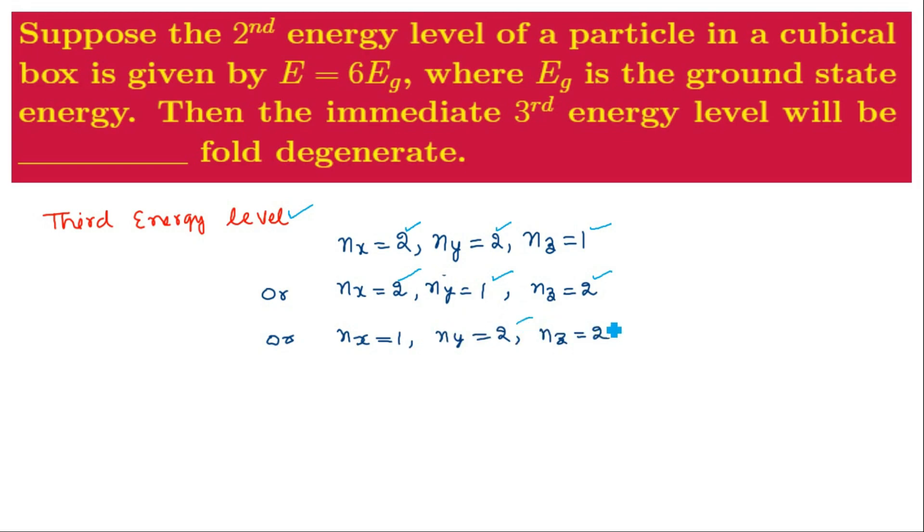or you can have NY and NZ 2 and NX is 1. And all these three different combinations of the quantum numbers NX, NY, and NZ give us the same value of energy, that is 9EG.